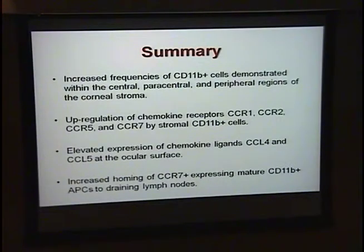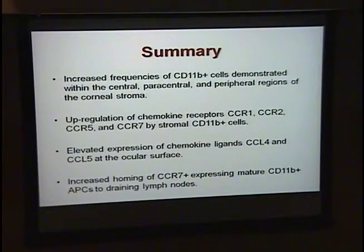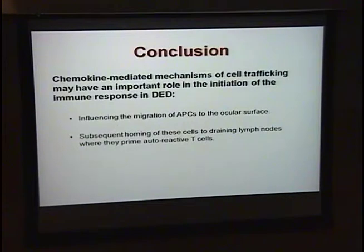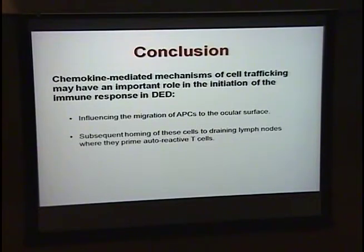In summary, we demonstrated increased frequencies of CD11B APCs within the corneal stroma in dry eye disease, associated with an upregulation of chemokine receptors by these cells, elevated expression of chemokine ligands on the ocular surface, and increased homing of CCR7-expressing mature APCs to draining lymph nodes. In conclusion, chemokine-mediated mechanisms of cell trafficking have an important role in the initiation of the immune response, influencing both the migration of APCs to the ocular surface and subsequent homing to draining lymph nodes where they initiate an autoimmune T cell response.